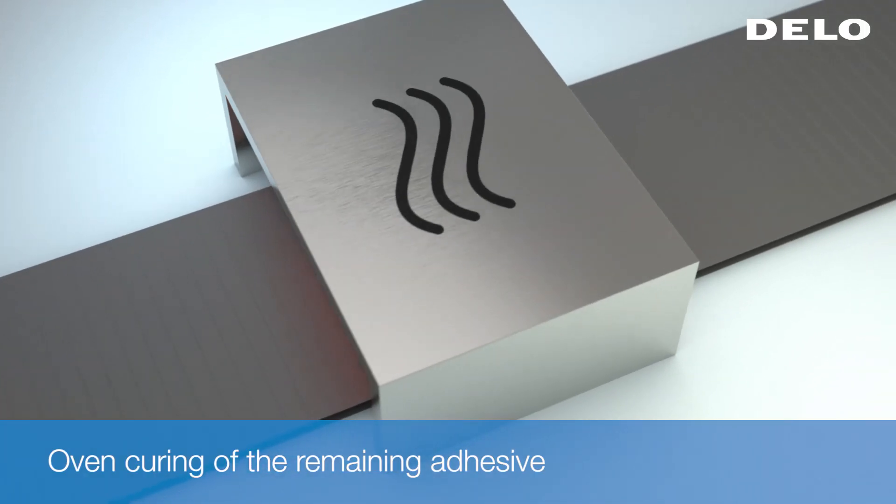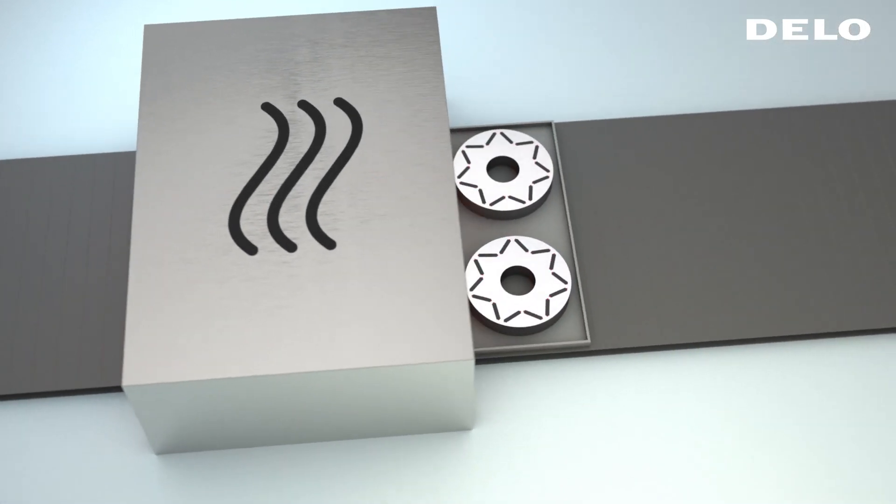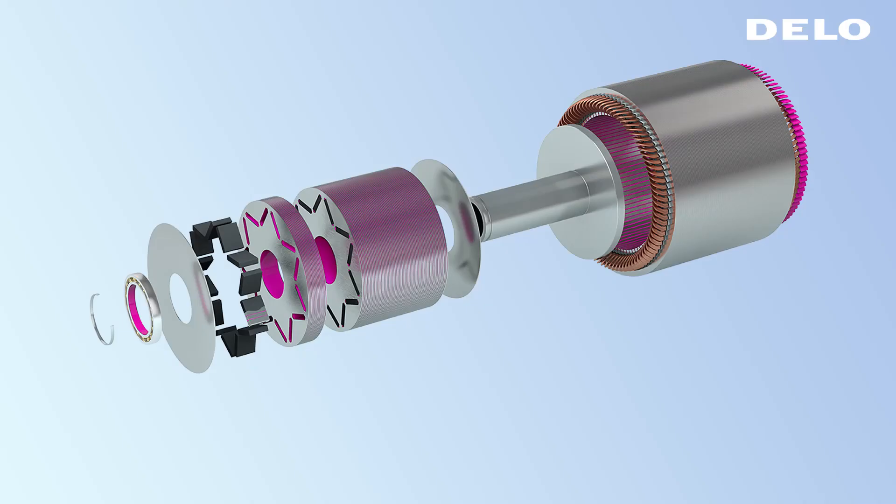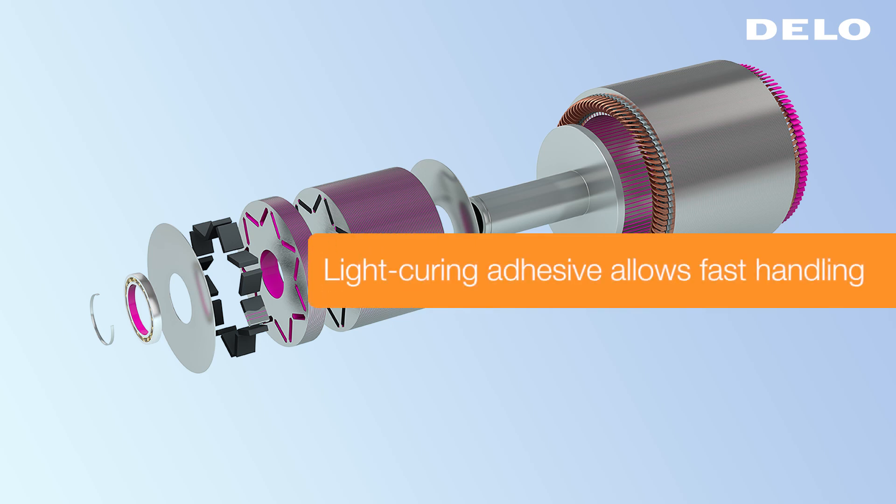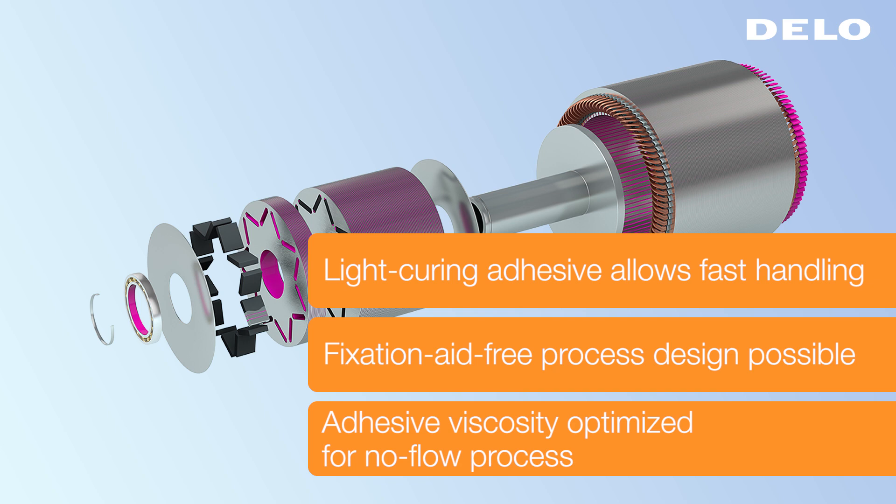With DILO's new dual curing adhesive, the UPH of structural bonding assemblies such as magnets and electric motors can be significantly increased. The fixation aid-free process design makes manufacturing easier and faster, and the viscosity is optimized for a no-flow process.